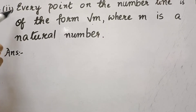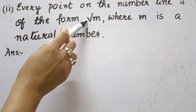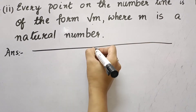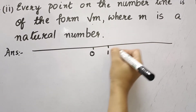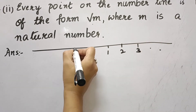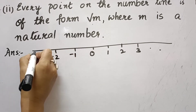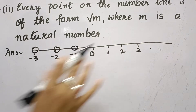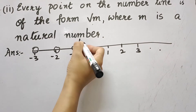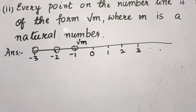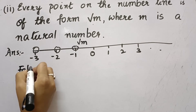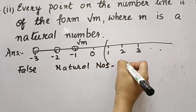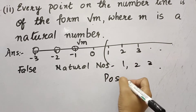The next statement is: every point on the number line is of the form √m, where m is a natural number. On the right-hand side of 0 we have 1, 2, 3, and on the left-hand side we have −1, −2, −3. Every point on the number line can be negative numbers also, and positive numbers also. It is false because the number line includes negative numbers, but natural numbers start from 1, 2, 3 — only positive integers.